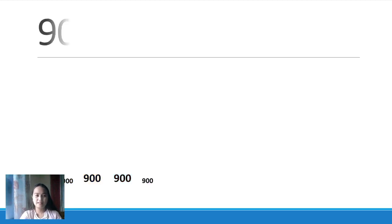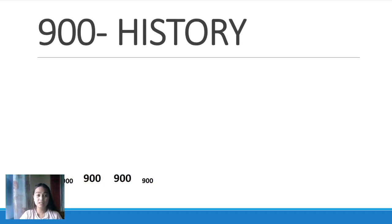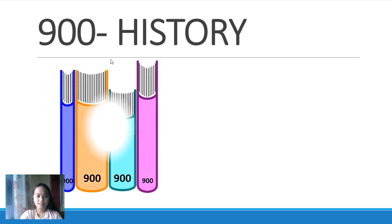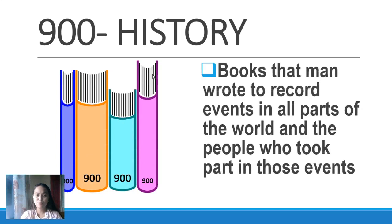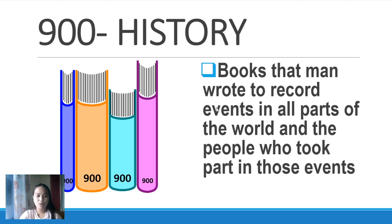Let's go to 900 — the last but not the least. 900 is all about history. Some of you like history, especially in your Araling Panlipunan. These are books that man wrote to record events in all parts of the world and the people who took part in those events. If you want to study history in advance before going to secondary school, go to the library and find the spine label numbered 900. That's all for classifying books in the library.